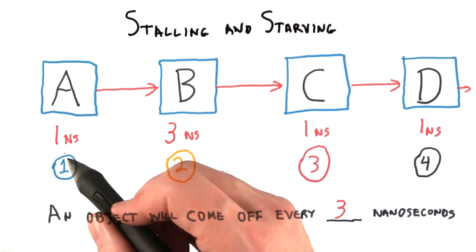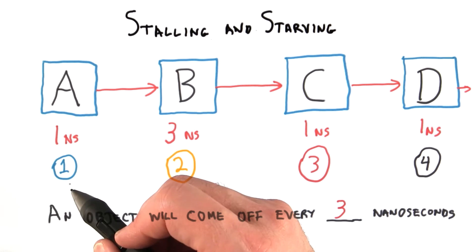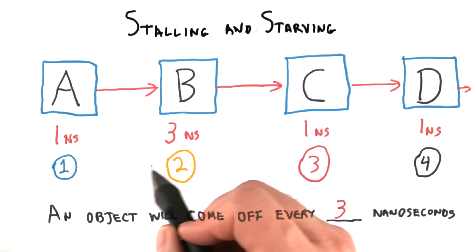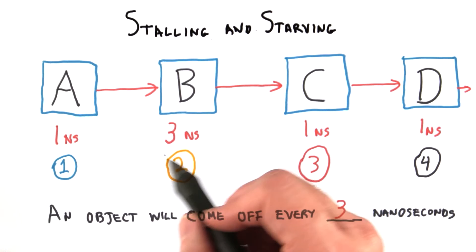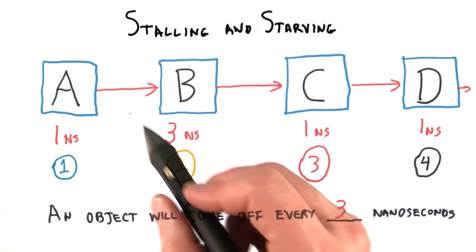On the other hand, what's happening here is stage A is finished processing object one, but object one can't move on because stage B is still processing object two. This is called stalling.